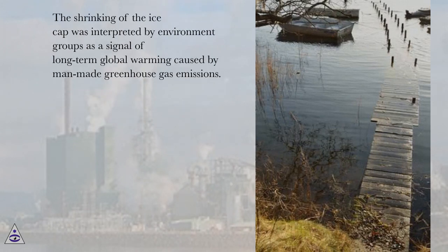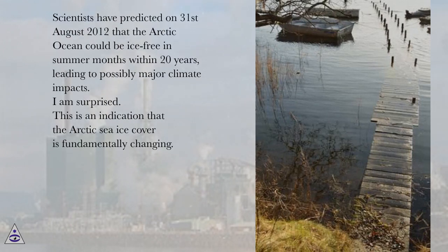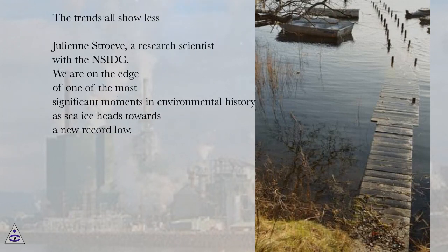The shrinking of the ice cap was interpreted by environment groups as a signal of long-term global warming caused by man-made greenhouse gas emissions. A study published in July in the journal Environmental Research Letters, that compared model projections with observations, estimated that the radical decline in Arctic sea ice has been between 70 to 95 percent due to human activities. Scientists predicted on August 31, 2012 that the Arctic Ocean could be ice-free in summer months within 20 years, leading to possibly major climate impacts. I am surprised — this is an indication that the Arctic sea ice cover is fundamentally changing. The trends all show less ice and thinner ice, said Julian Stroeve, a research scientist with NSIDC.